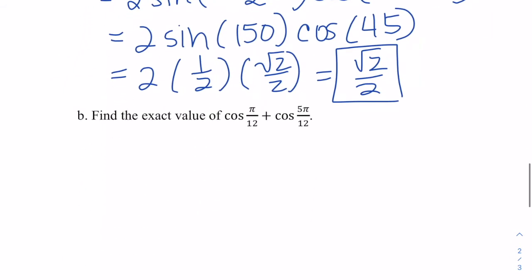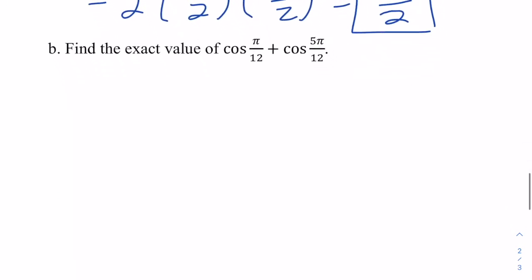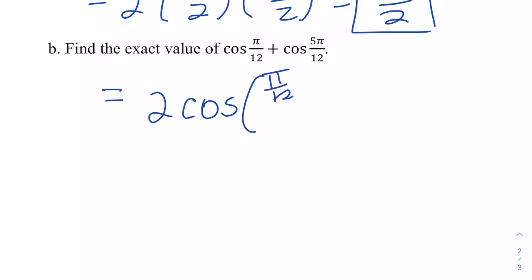Now let's practice with radians. You can pause this video and try it, then come back to check your answer. For cosine of π/12 plus cosine of 5π/12, this is a sum, so we'll have 2 times cosine of (π/12 + 5π/12)/2, times cosine of (π/12 − 5π/12)/2.